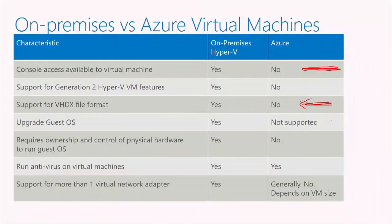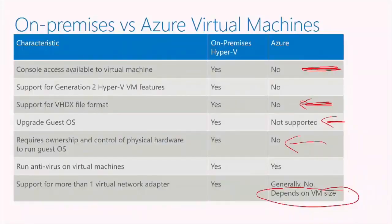Upgrades to the guest operating system within Azure are not supported — you would deploy a different version of the operating system instead. With Azure, you don't own the physical hardware; Microsoft does, and you're simply leveraging their hardware. Both support any virus scanner. More than one network adapter depends on the size of the VM — many VMs support multiple network adapters, but you've got to choose a size that supports more than one NIC.